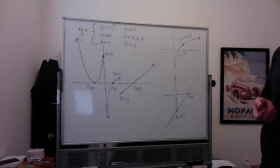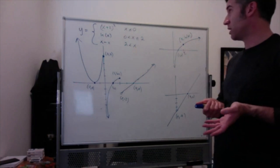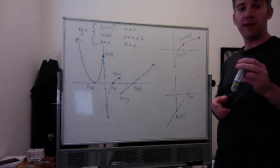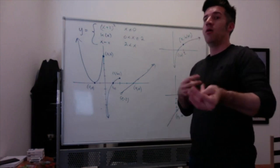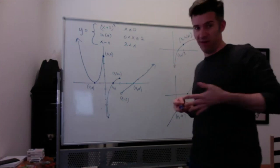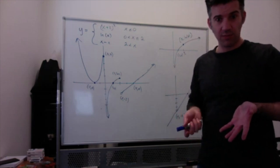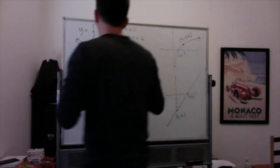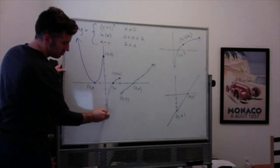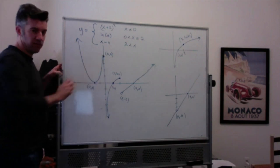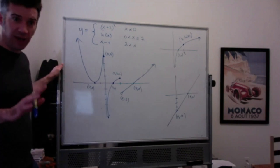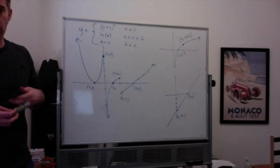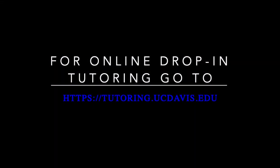This piecewise function is defined everywhere. Normally a function isn't defined at a vertical asymptote, but piecewise functions are exceptions — I totally have a vertical asymptote at x equals zero from the log piece, but I also have the function defined at x equals zero by the first piece. That can happen with piecewise functions; it's nothing to worry about.